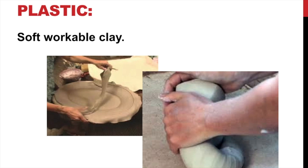When we talk about plastic clay, we're really talking about plasticity — when clay is able to bend without breaking. Plastic clay is soft, workable clay. Plasticity refers to how easy it is to bend without breaking or cracking, and that's a really important term you'll understand once you start working with clay.